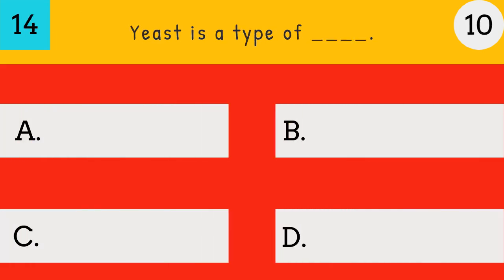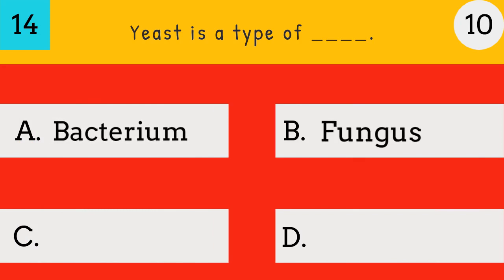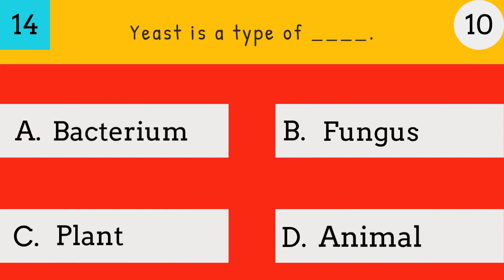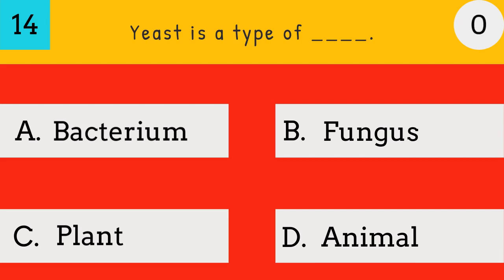Yeast is a type of — bacterium, fungus, plant, or animal? The answer is fungus — yeast is a type of fungus.